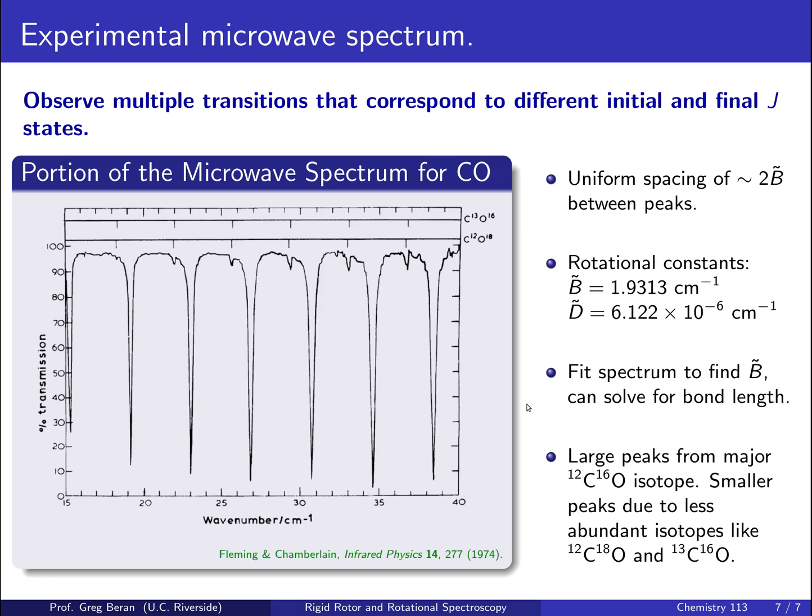Finally, here's an example of an experimental microwave spectrum. Microwave spectroscopy is synonymous for rotational spectroscopy, because the transitions occur in the microwave region of the spectrum. And so, as you would expect, based on our earlier discussion, we see multiple transitions in the microwave spectrum, in this case for CO, corresponding to different initial and final j states. So, we see all these different peaks.